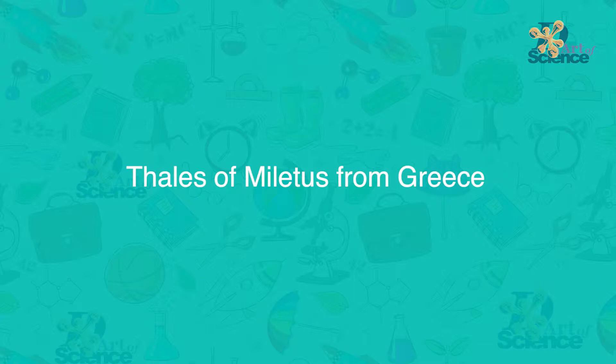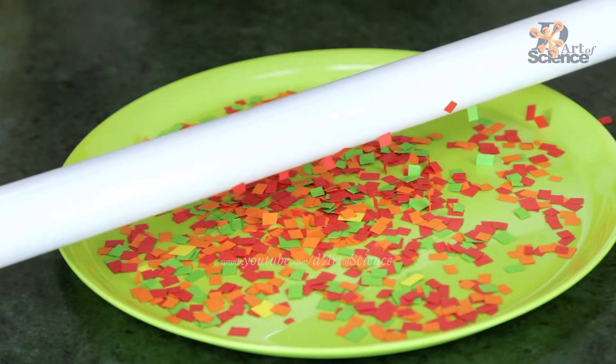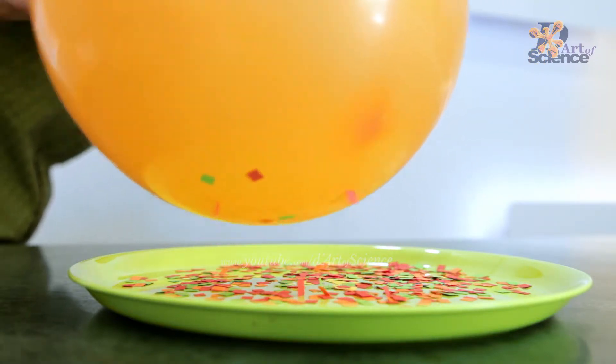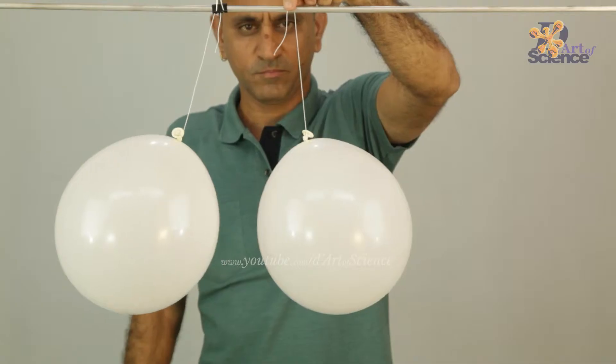In 500 BC, Thales of Miletus from Greece discovered the principle of static electricity when he observed that if you rub an animal fur on a material like amber, it started attracting small particles like dust and feathers. Thousands of people have been doing these simple but exciting experiments since then.